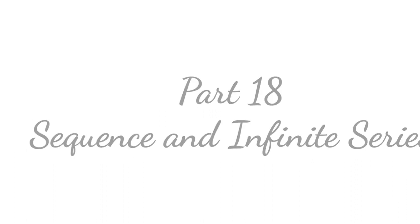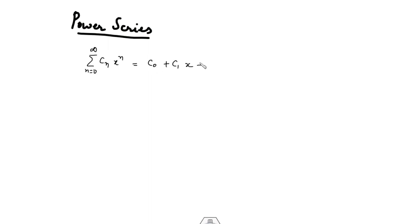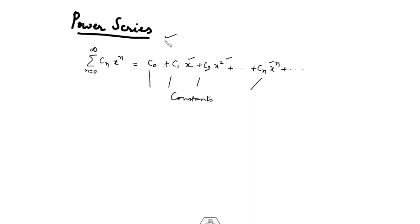Hello everyone, today I'm going to explain what is the power series and how to check the convergence and divergence of this power series. Basically, a power series is a series of the form sum of c_n x^n where n varies from 0 to infinity, so this is c_0 plus c_1 x plus c_2 x squared and so on. Here c_0, c_1, c_2, up to c_n are constants and x is any real number, so you have a series in terms of powers of x — that's why this is called a power series.